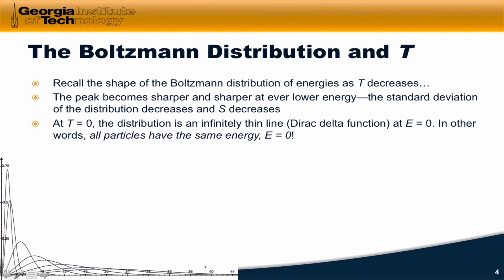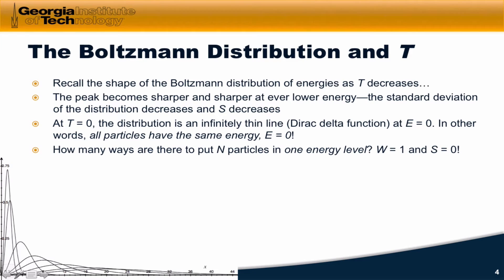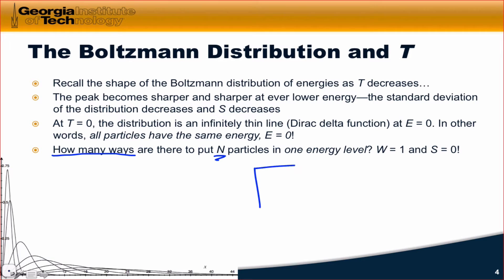You can imagine continuing this trend until we get to T equals zero, at which point all of the particles have the same energy and they're all at E equals zero. With all particles in the same energy, we can ask: how many ways are there to put N particles in one energy level? No matter the value of N, we can draw an analogy to throwing N particles all in one box when there are, for example, four possible boxes. There's only one way to do this — it's N things taken N at a time. In that case W equals 1, and S is equal to zero.